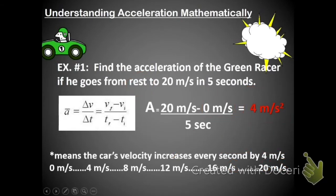Let's talk about this conceptually. This 4 meters per second per second, or 4 meters per second squared, is saying that for every second that this car is accelerating, its speed increases by 4 meters per second.